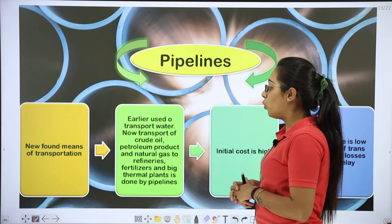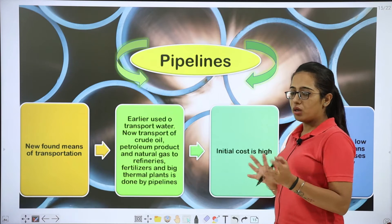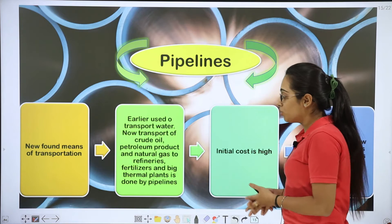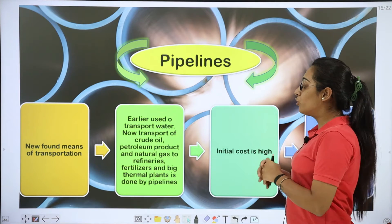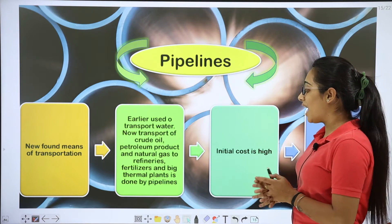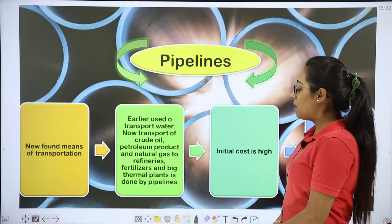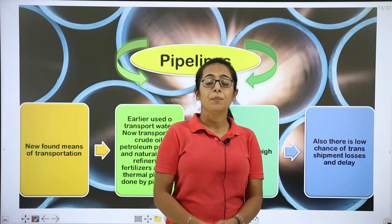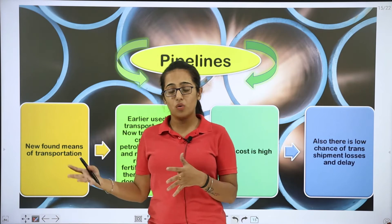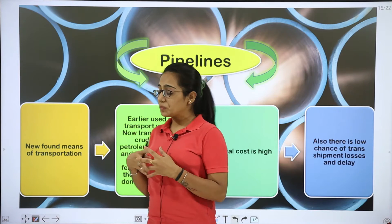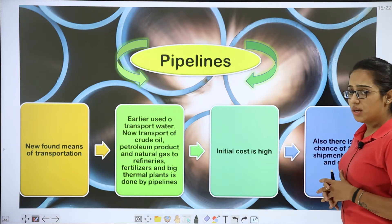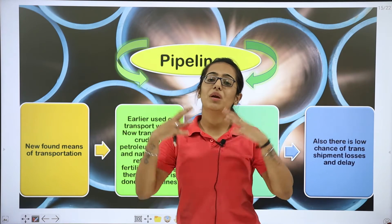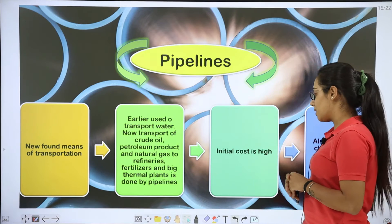Earlier pipelines were used only to transport water — to direct water from one place to another. But now, transport of crude oil, petroleum products and natural gas to refineries, fertilizers and big thermal plants is done by pipelines. There are also gas pipelines to direct gas from other places. It can even go underwater.